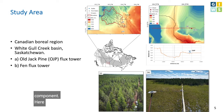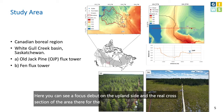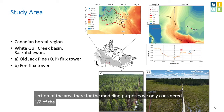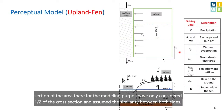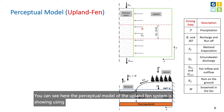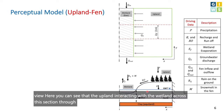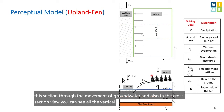Here you can see a focused view on the upland side and a real cross-section of the area. For modeling purposes, we only considered one half of the cross-section and assumed similarity between both sides. The perceptual model of the upland-fen system is shown using two views — a top view and a cross-sectional view. In the top view, you can see the upland interacting with the wetland through groundwater movement, and in the cross-section, all the vertical fluxes contributing to the system.